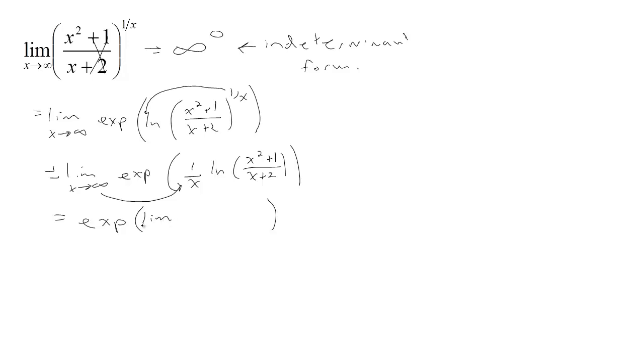So I have the limit as x tends to infinity. Let me write it as a fraction. I've got the natural log of x squared plus 1 over x plus 2, and that's all divided by x. I'm just thinking of this natural log as being written over 1 and multiplying those fractions to get a denominator of x there.